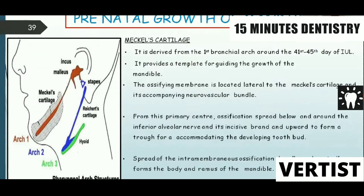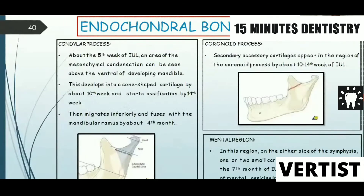Spread of intramembranous ossification forms the body and ramus of the mandible. For endochondral bone formation: in the condylar process, at about the 10th week of intrauterine life a cone-shaped cartilage develops, and ossification begins by 14 weeks. In the coronary process, secondary accessory cartilages appear by about 10 to 14 weeks of intrauterine life. In the mental region, one or two small cartilages appear on either side of the symphysis and ossify in the seventh month of intrauterine life, forming a variable number of ossicles in the fibrous tissue of the symphysis.